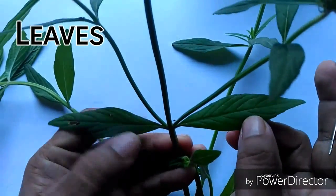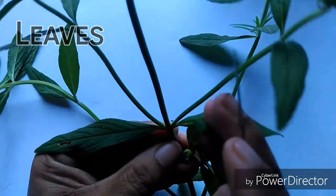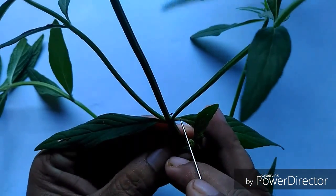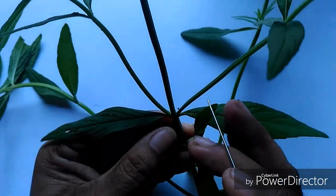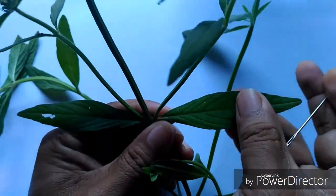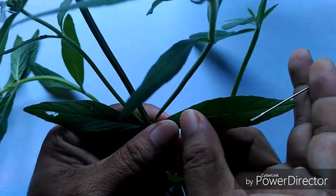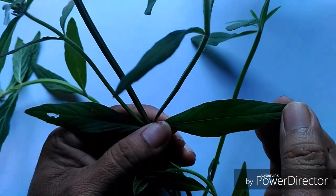Simple and subsessile. Why is it subsessile? Because the petioles are very short and it is narrowly, the leaf is narrowly oblong and lanceolate.